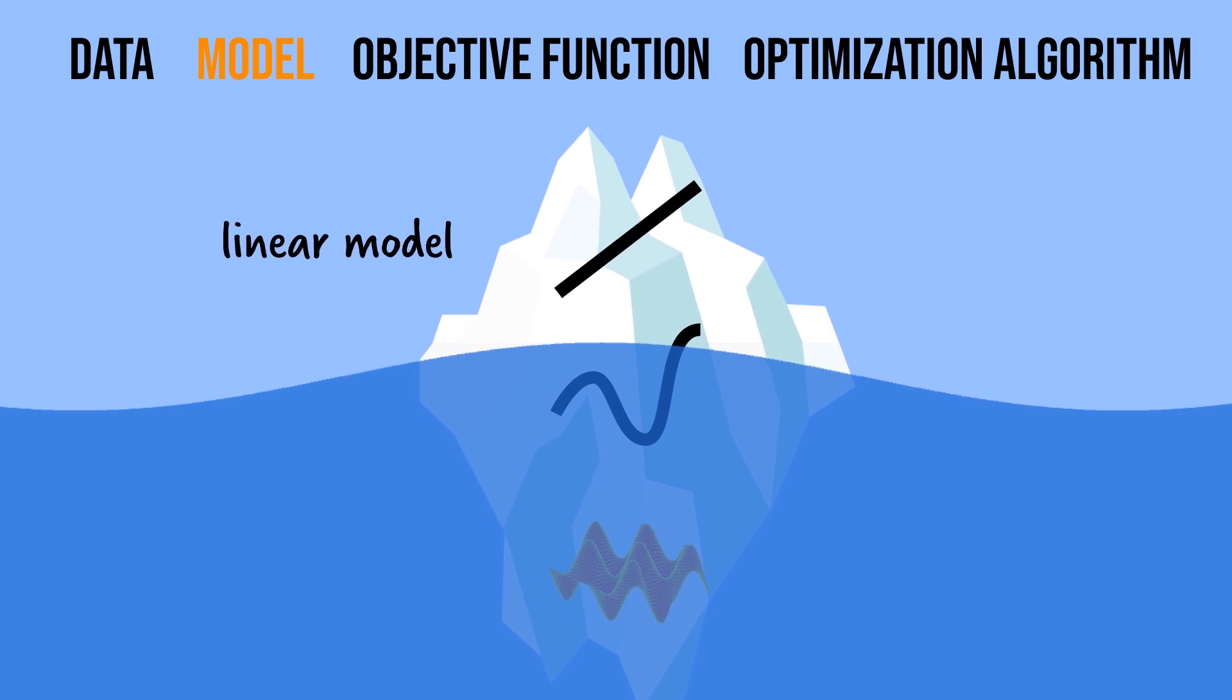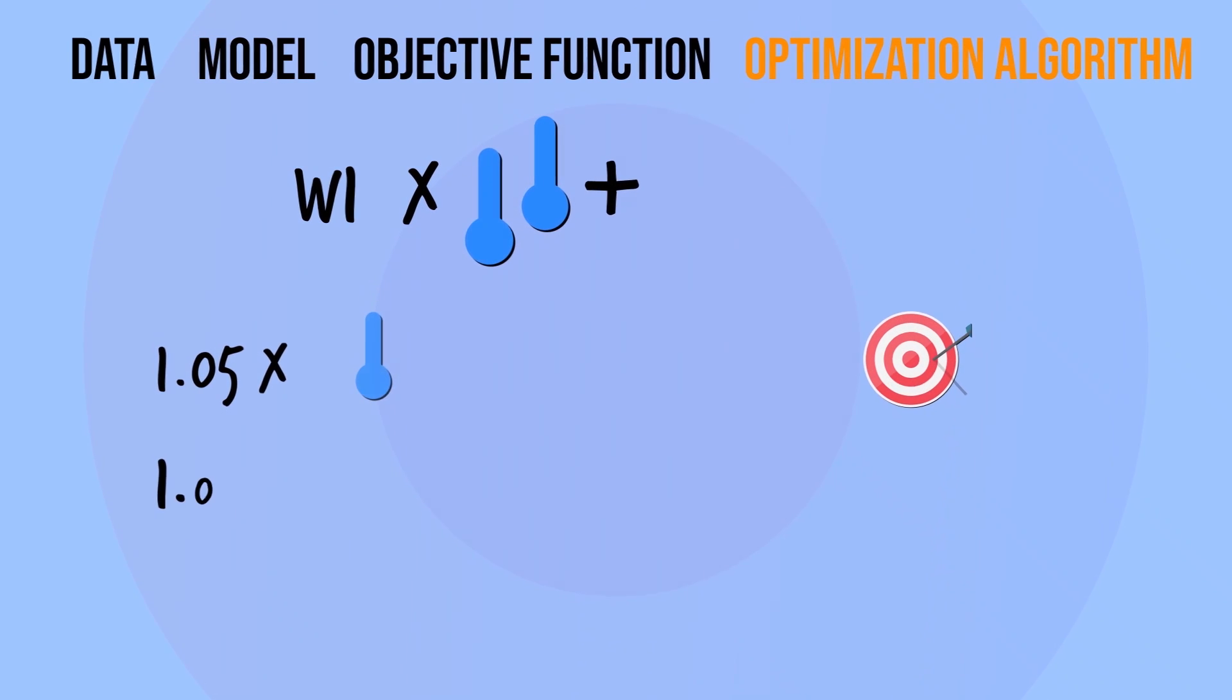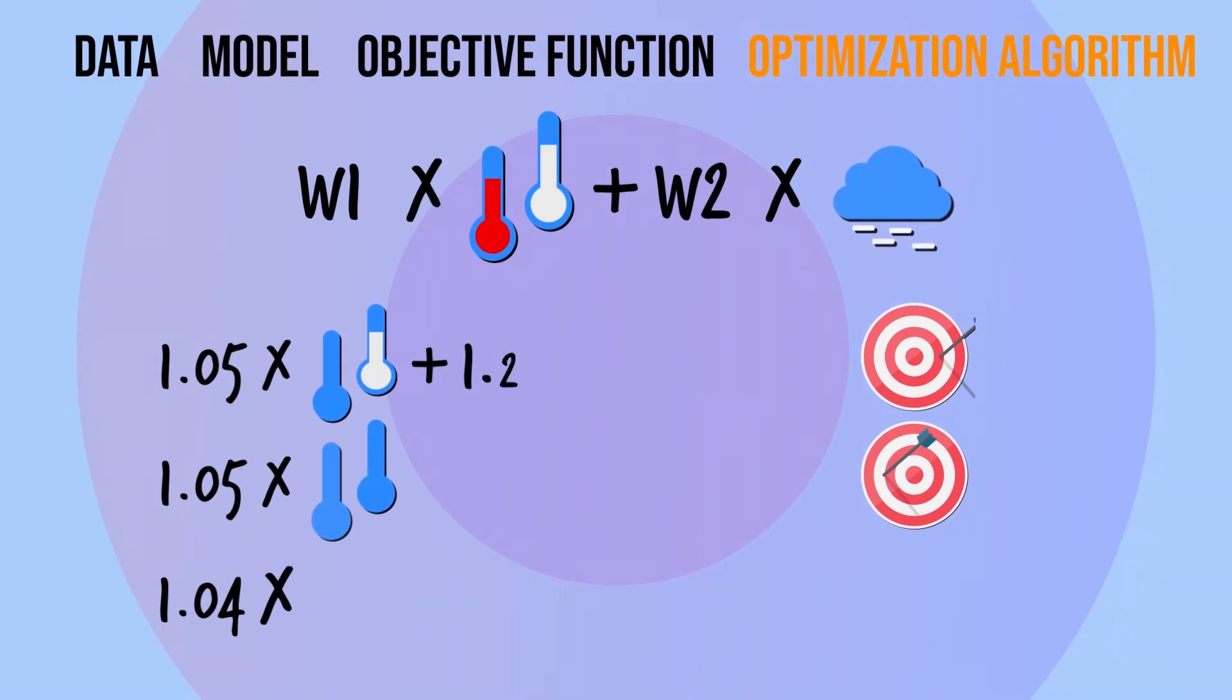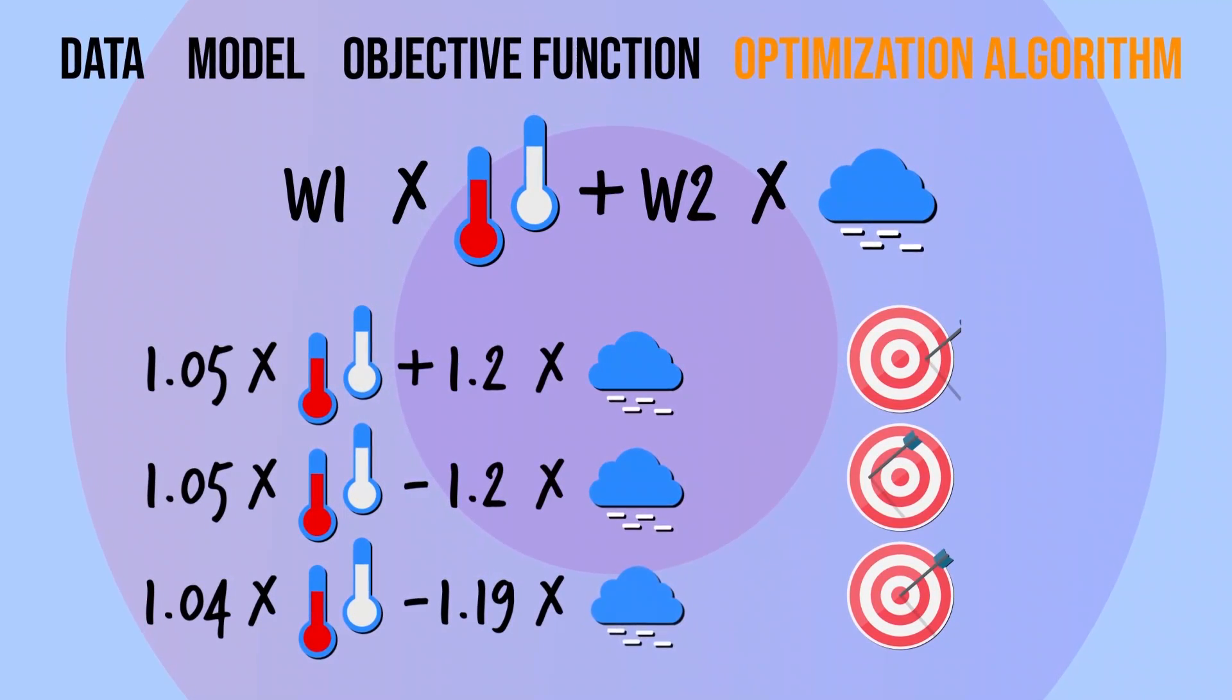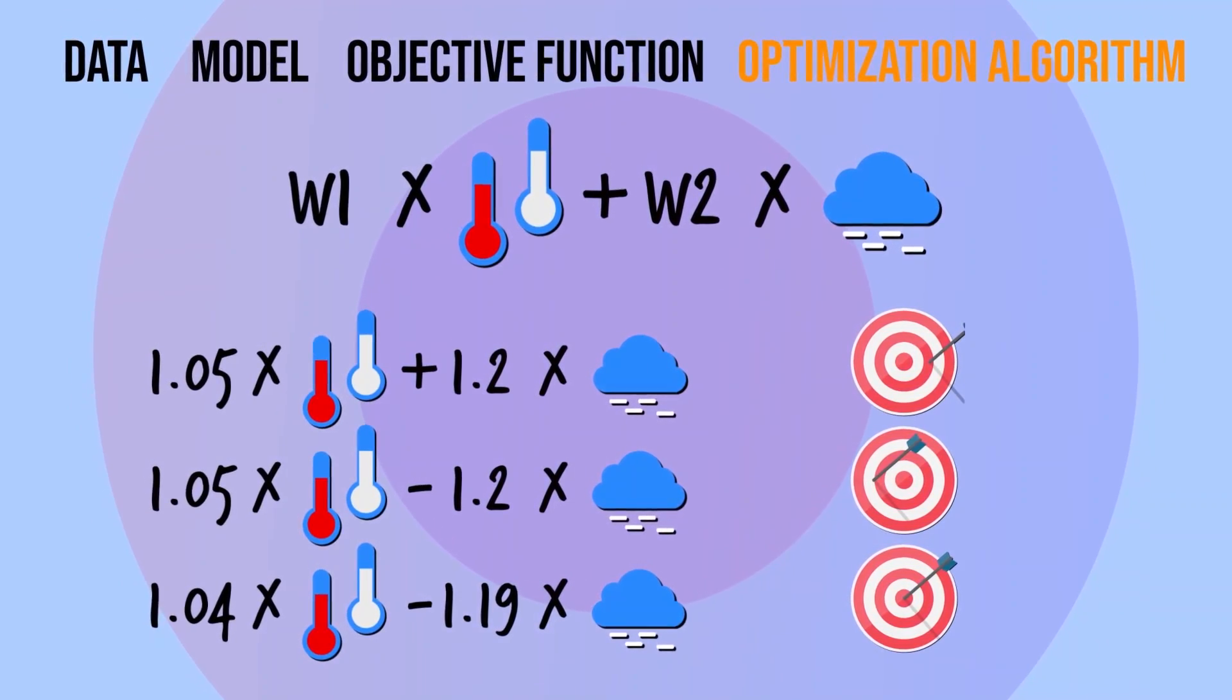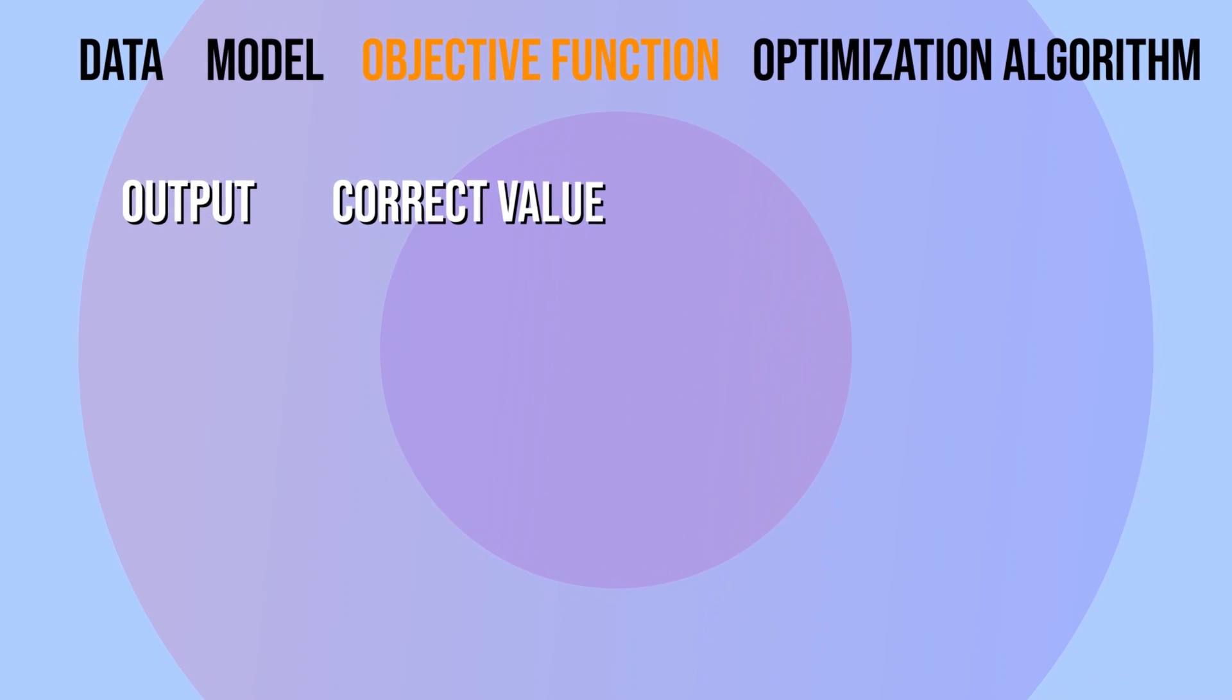We then compare that predicted output to the actual output to produce an error value, and that error is what we minimize during the learning process using an optimization strategy like gradient descent.